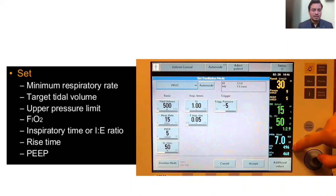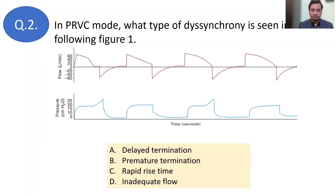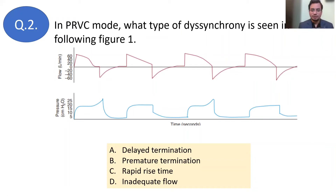FiO₂, I:E ratio, and PEEP can be set depending on the patient's situation. Now let's move on to question number two, again about the type of dyssynchrony. In PRVC mode, what type of dyssynchrony is seen in the following figure? Examine what is happening here — this is a question about dyssynchrony, which is commonly asked in competitive exams.